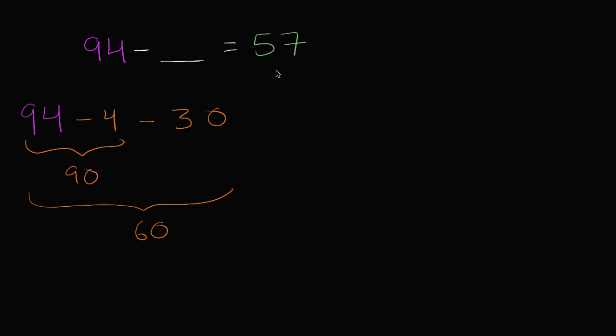And then to go from 60 to 57, pretty straightforward. I just have to subtract another three. 60 minus three, this is going to be 57. So how much did I subtract? I subtracted four, 30, and three. So let's see, I subtracted, this is 34, 37. I subtracted 37, and just like that.